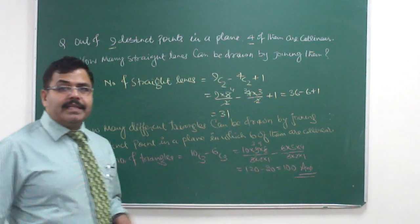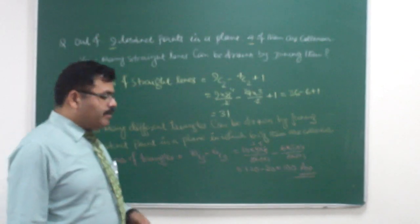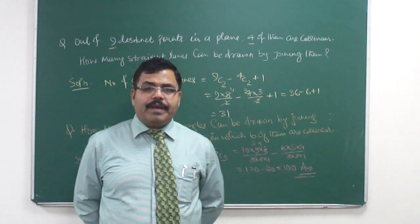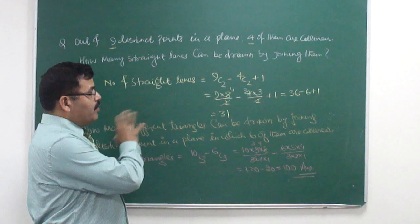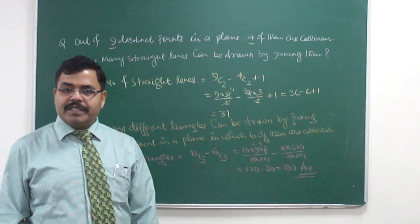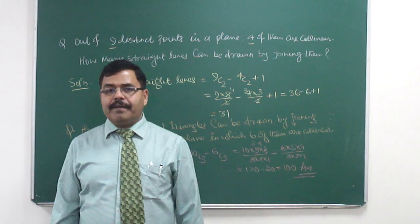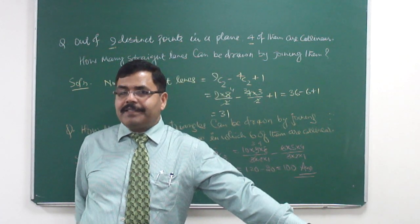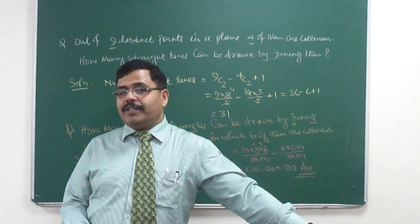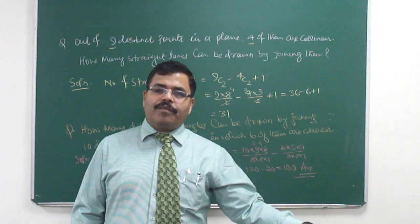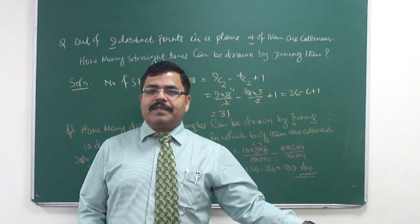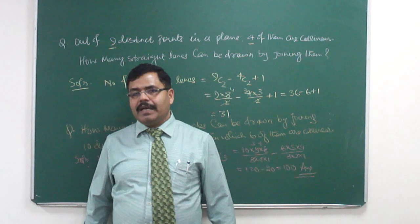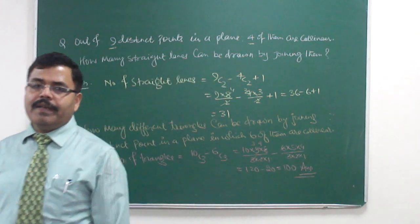This can also be solved by some other method, which we will discuss in the next video. I hope you were able to understand this concept and mechanism for dealing with questions involving restricted combinations, where some points are given as collinear. The same method will be applicable for finding the number of quadrilaterals, pentagons, and hexagons when some points are collinear. We will discuss that in the next class. Till then, watch our videos and subscribe to our channel on YouTube. Thank you very much for watching. God bless you.